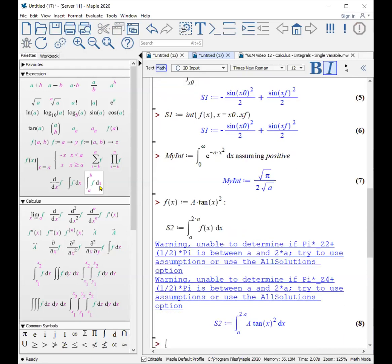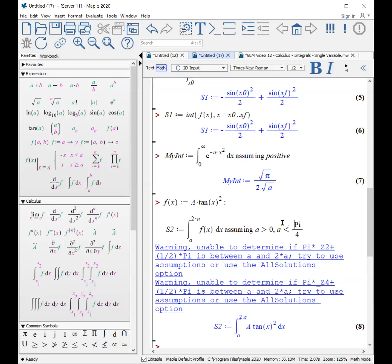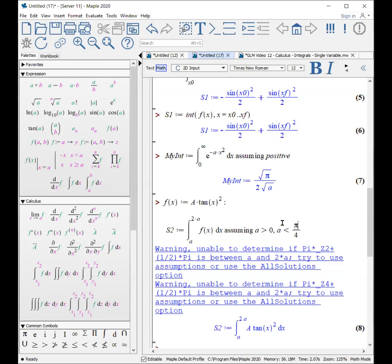Now, if I do this, it's not going to be able to get an answer because essentially the tangent is going to blow up, and it doesn't know anything about a. Well, one thing is you can help it out. In our particular case, I know a is positive. So I'll say assuming a is greater than zero. But I can also tell it that a is less than pi over 4. How do I know? Why did I choose pi over 4?